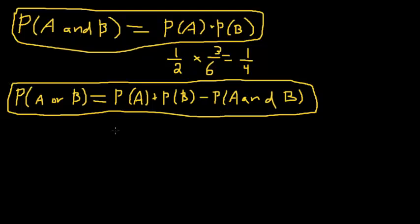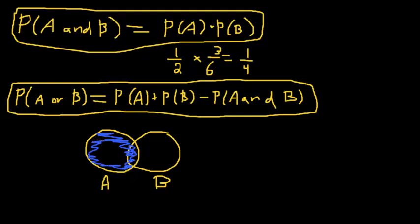but you could easily derive it using this Venn diagram approach. Let's say this circle is all of the possible outcomes of A, and this circle is all of the possible outcomes of B. If we find what the probability of A is, that's just this area.